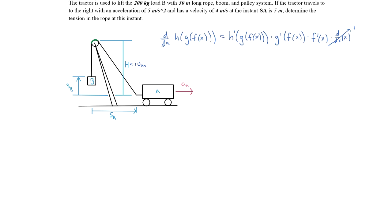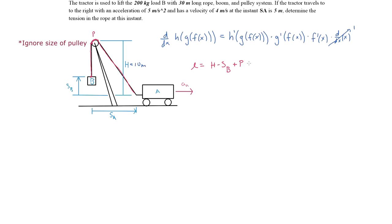We add up the length of the rope in terms of variables and constants. From the pulley to B, the length is h minus SB. We add a constant length p for the rope around the pulley, which doesn't change with respect to SA or SB. Then the final segment of rope length is found using the Pythagorean theorem — that portion forms a right triangle — giving the length as (h² + SA²)^(1/2).